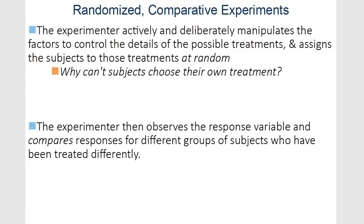The experimenter always assigns subjects at random — that's very important. Why can't they choose their own treatment? Think of the fertilizer example: if the plants could choose, they wouldn't choose to not get the fertilizer. All the plants would want to get the fertilizer. So it has to be at random, and then they observe the response variable and compare all those different responses, looking for a difference.